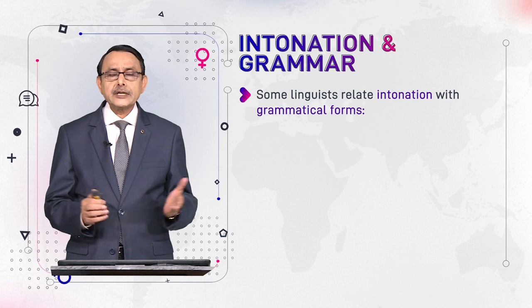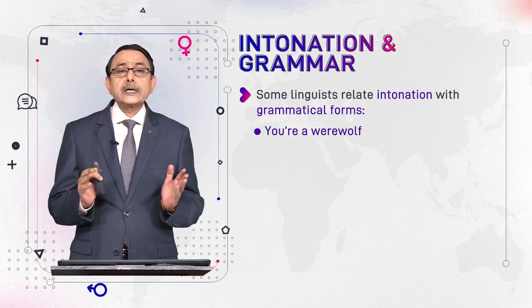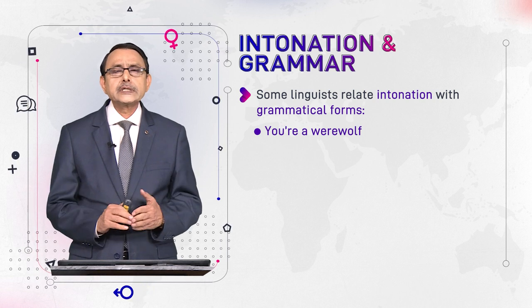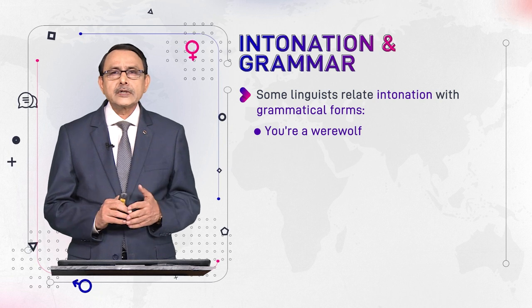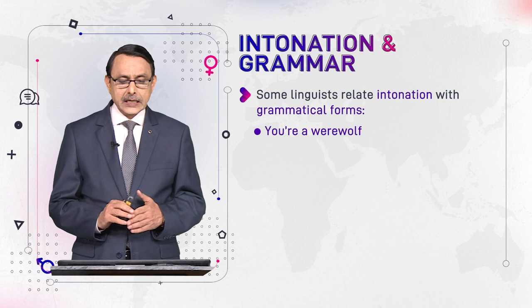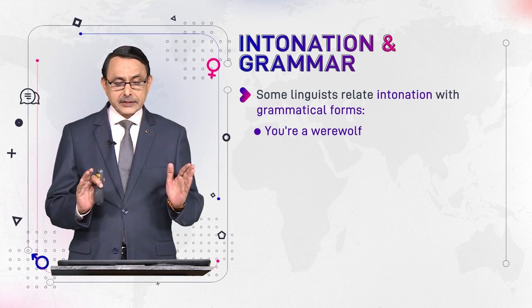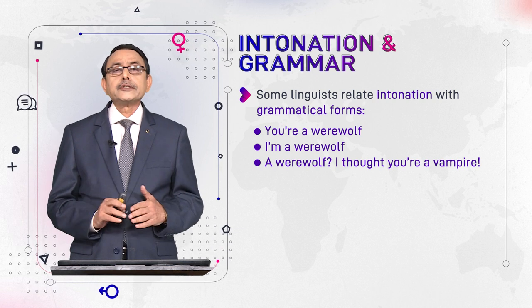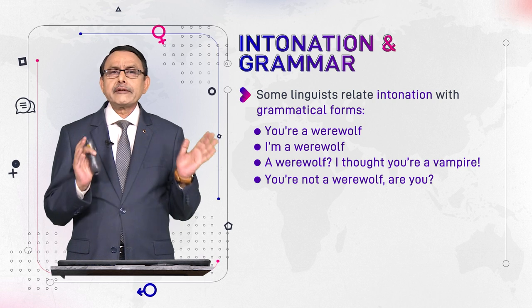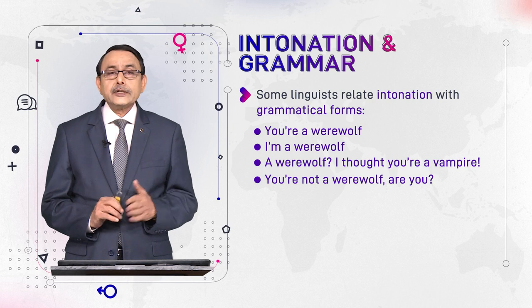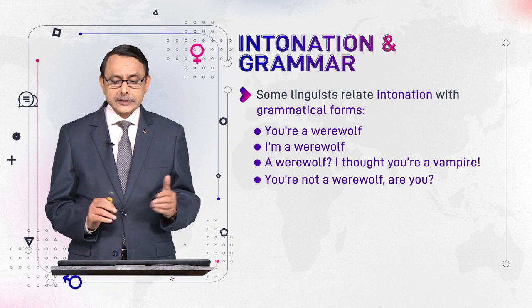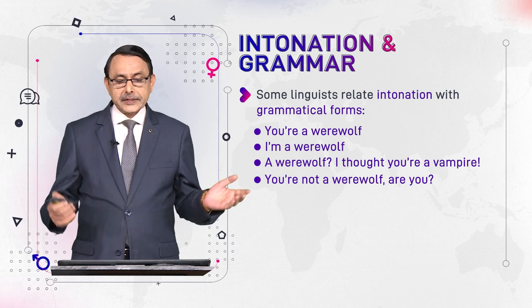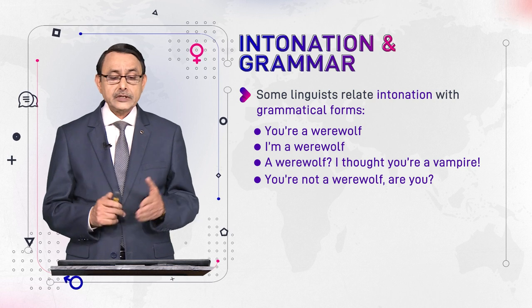Consider these example sentences: 'You are a werewolf' — a kind of character in stories that becomes a wolf during a full moon. 'I am a werewolf.' 'A werewolf? I thought you were a vampire.' 'You are not a werewolf, are you?' And similarly, 'You are a werewolf, aren't you?' — these are different utterances we will examine.